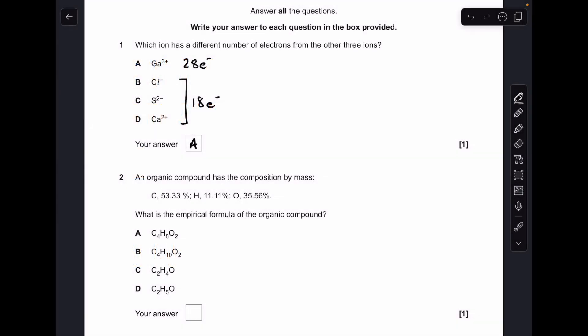Okay, so make a start. You can see I've already answered number 1, so it's A. Gallium 3+ ions have got 28 electrons, whereas the other 3 have got 18 each.